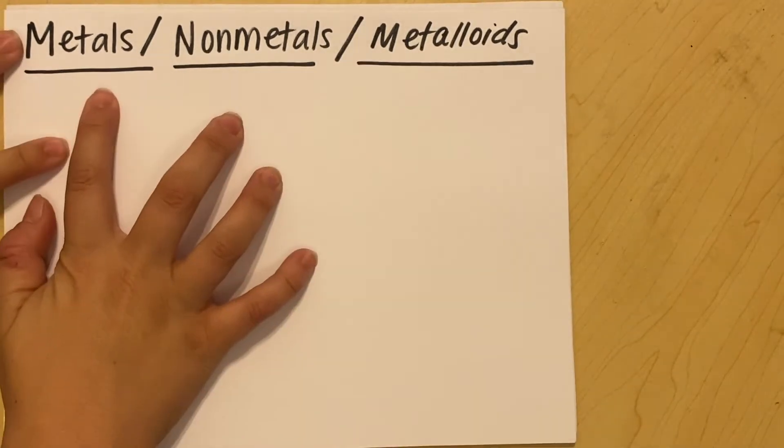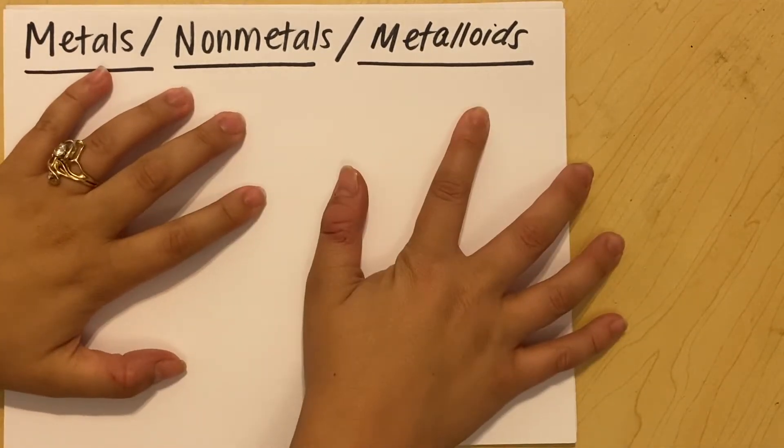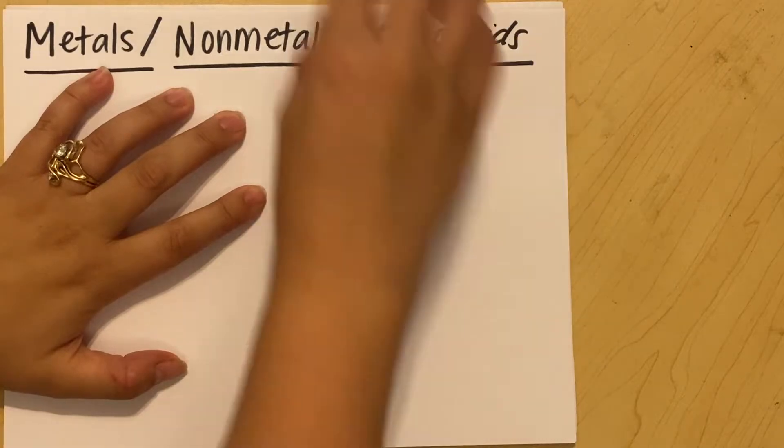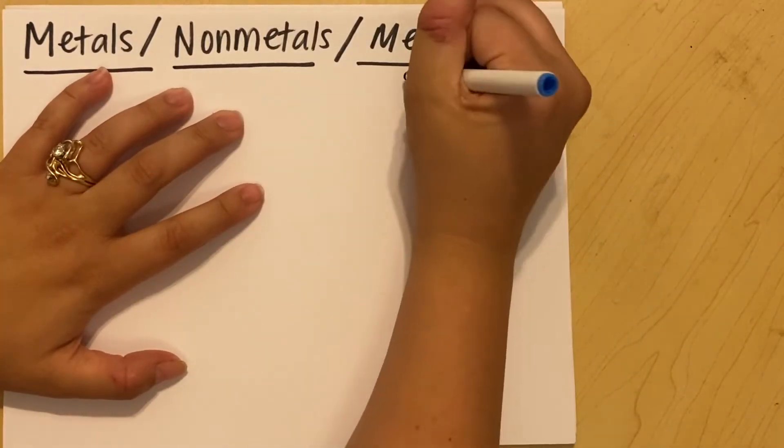So in this video, we're going to look at the difference between metals, non-metals, and metalloids. And sometimes metalloids are called semi-metals. They mean the same thing.